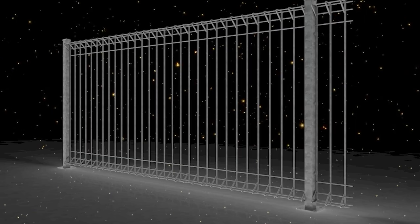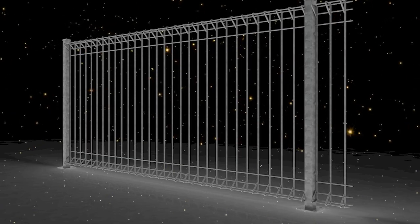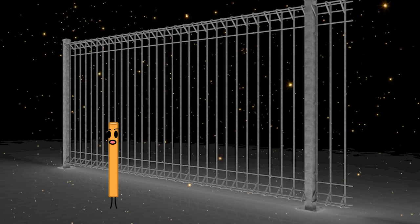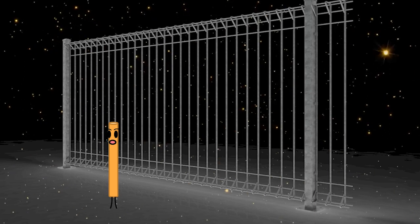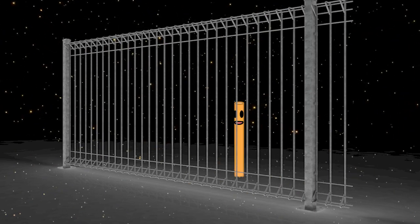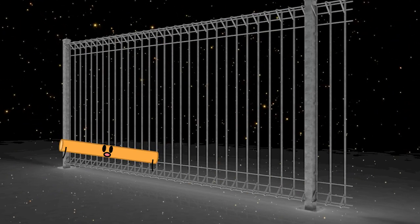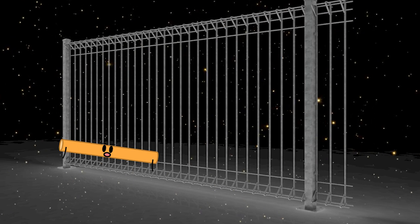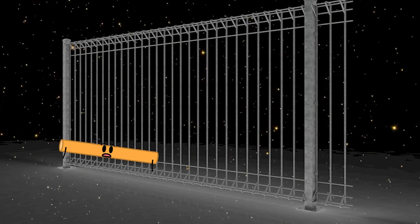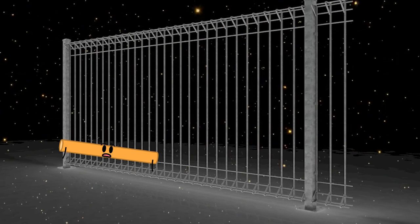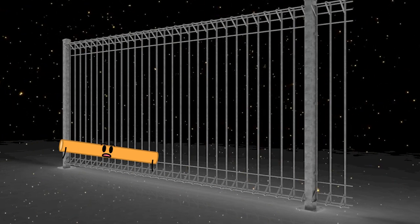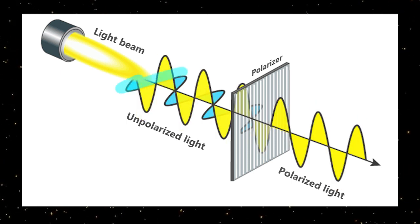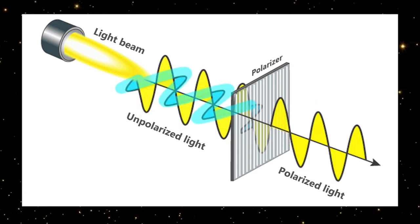Think of a polarizer like a fence. If the fence poles are vertical and you try to pass some sticks through the fence, the sticks must go through in a vertical direction. If you hold the stick sideways in the horizontal direction, it doesn't make it through the fence. Light waves work like sticks — vertical waves will pass through, and horizontal waves will not.